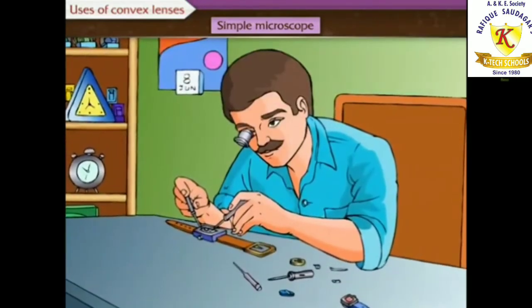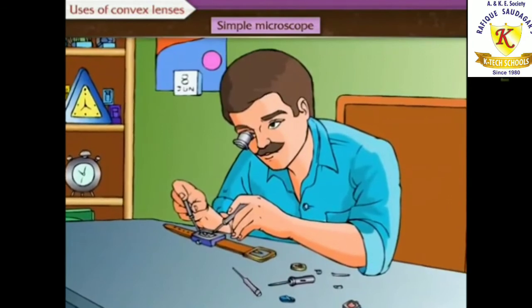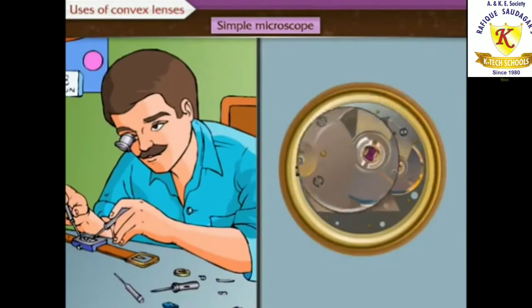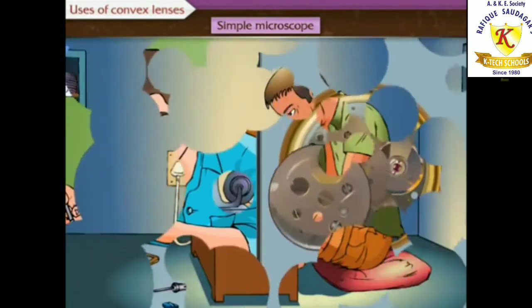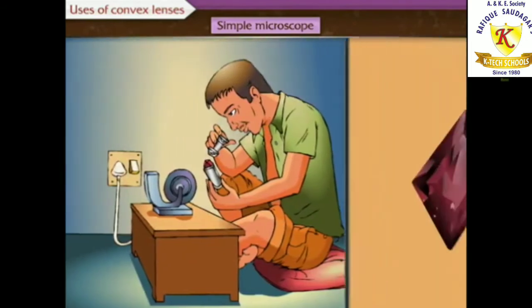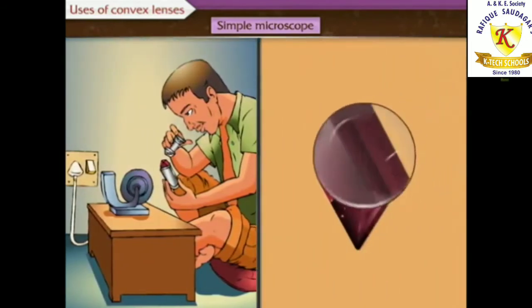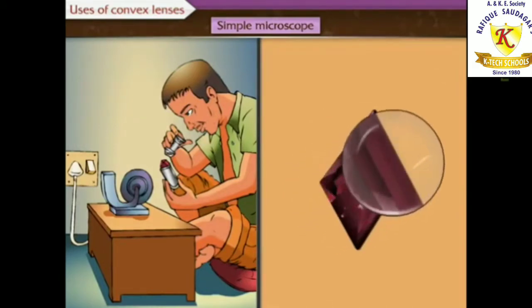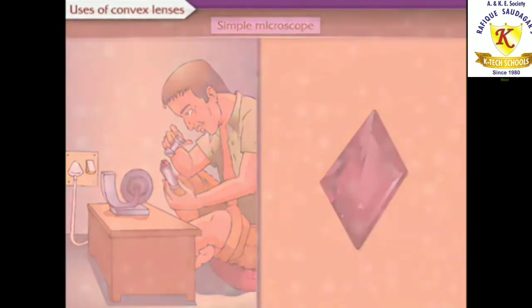These lenses are used by a watchmaker who repairs the watches. He can see the minute objects while repairing the watch and also by jewelers in testing the precious gems and finding out the flaws in it and their defects as well.